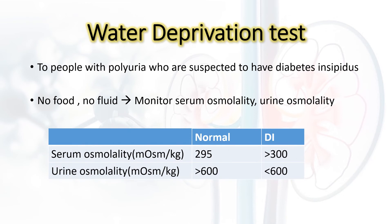Once we know the patient has diabetes insipidus, we then need to identify the type — what type of diabetes insipidus the patient has.